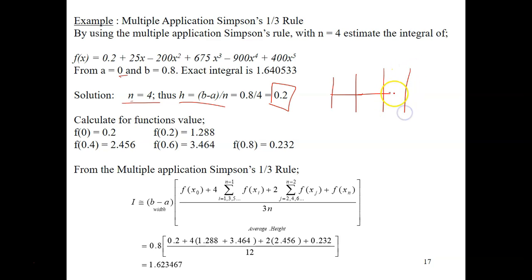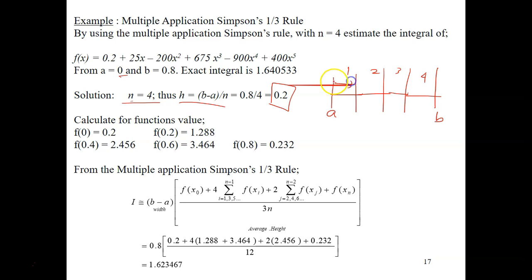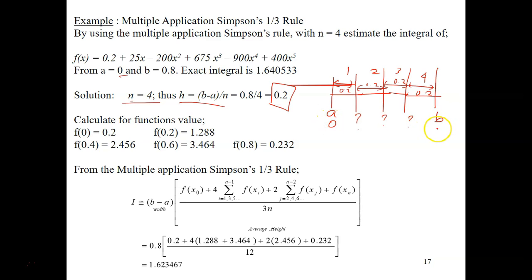The segments have to be equispaced. There are 4 segments — first, second, third, and fourth. This is your A and this is your B, and these segments are all equispaced with width or step size of 0.2. The problem now is to identify the intermediate points, since we know A is 0, B is 0.8, and the step size is 0.2.